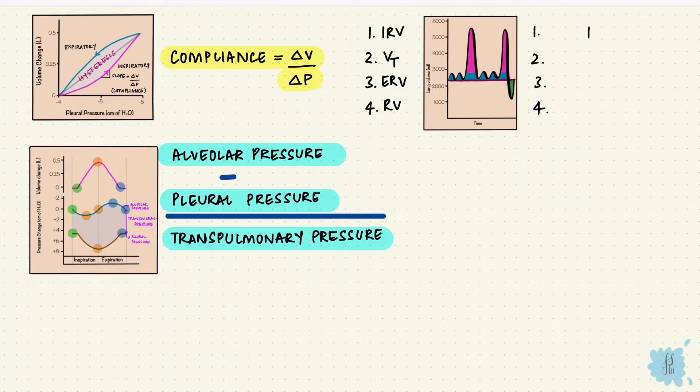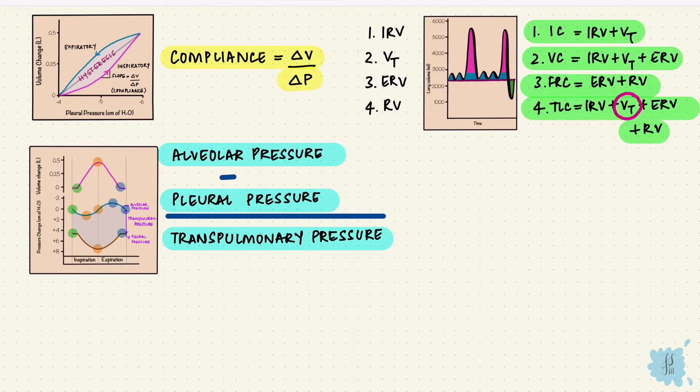The capacities are the sum of volumes. The first two - the inspiratory reserve volume and the tidal volume - is the inspiratory capacity. Add the expiratory reserve volume to that and we get the vital capacity. Take just the ERV and add the residual volume and you get the functional residual capacity. Put all of them together and you get the total lung capacity - that's the IRV, the tidal volume, the ERV, and the residual volume.